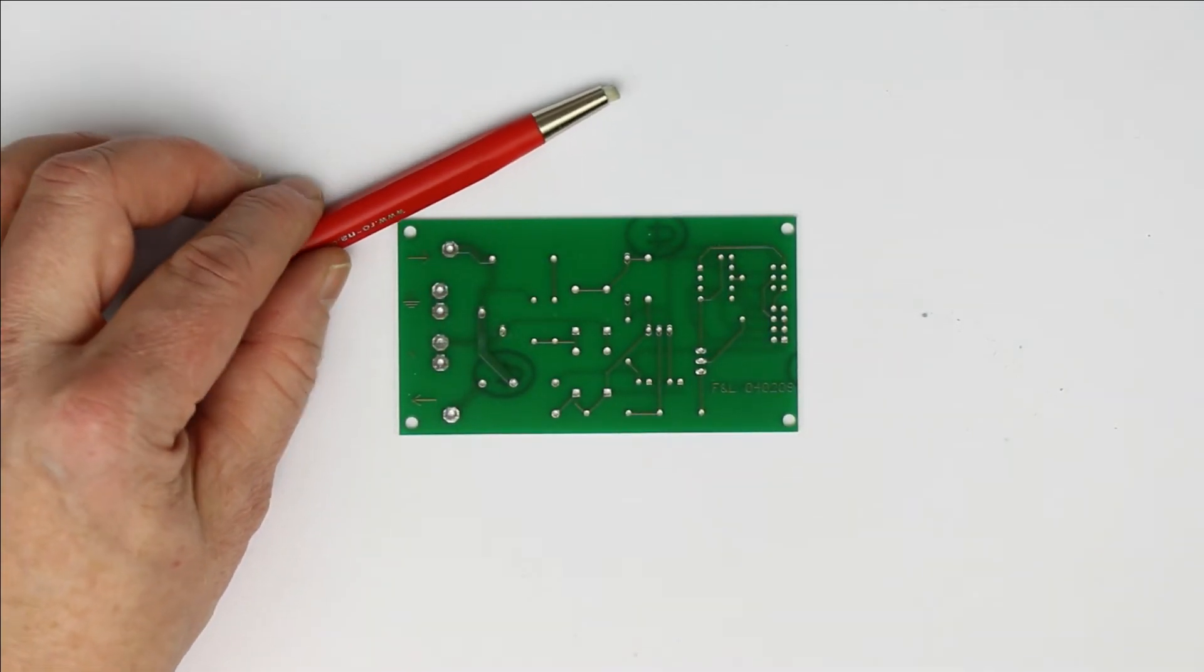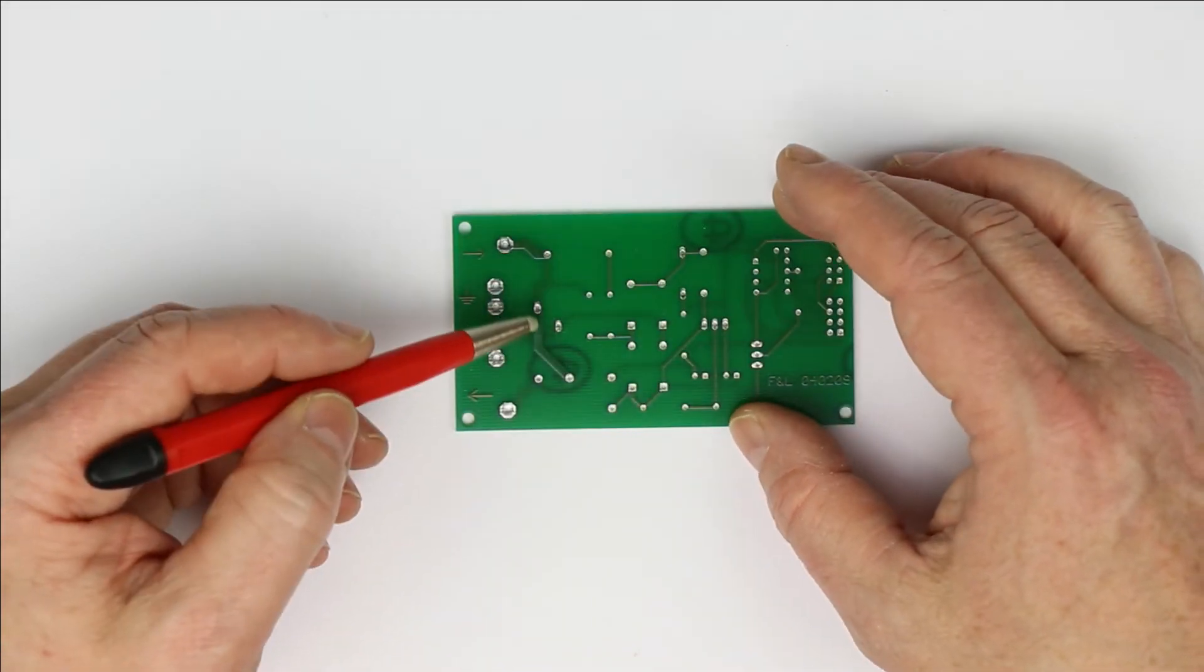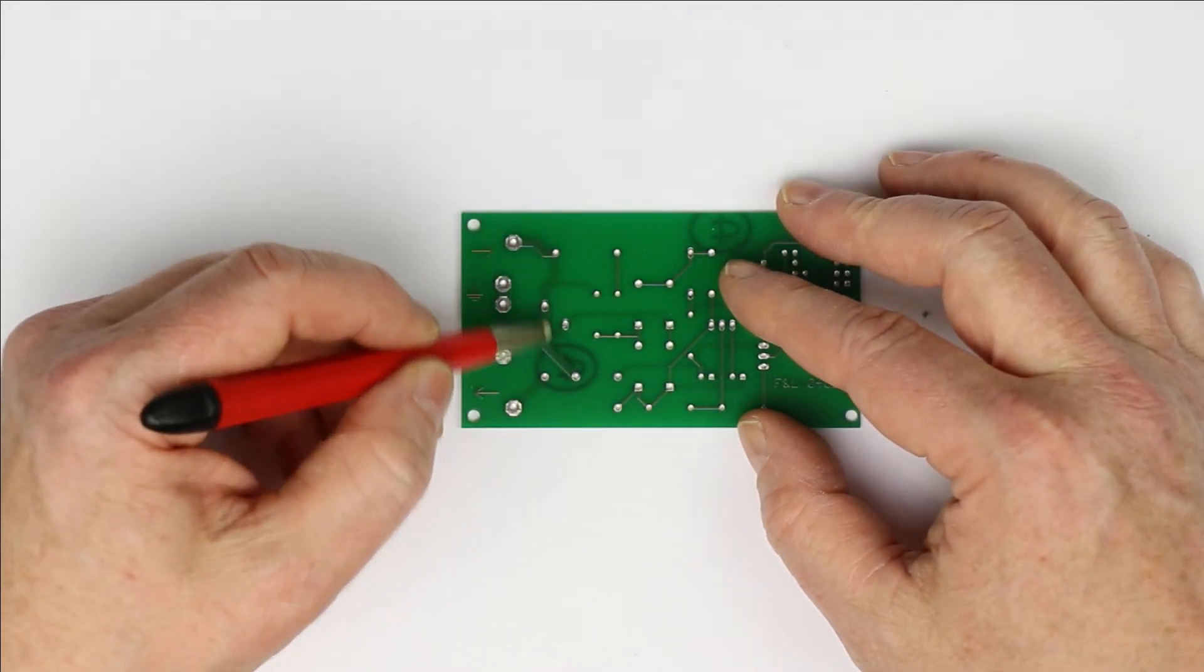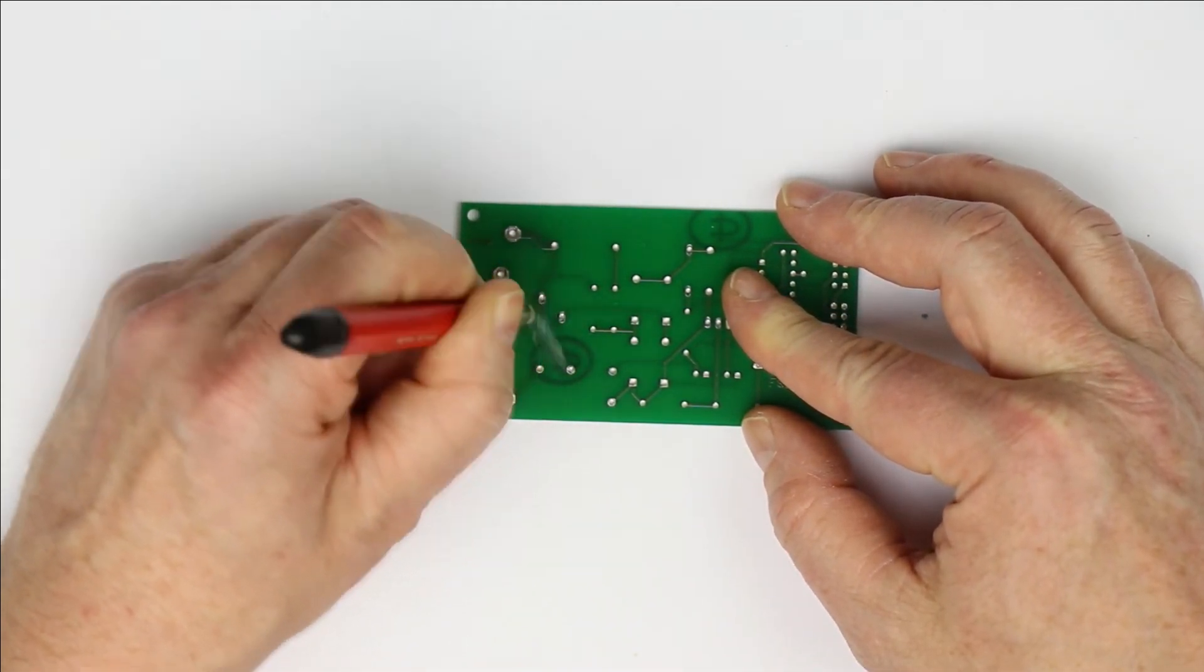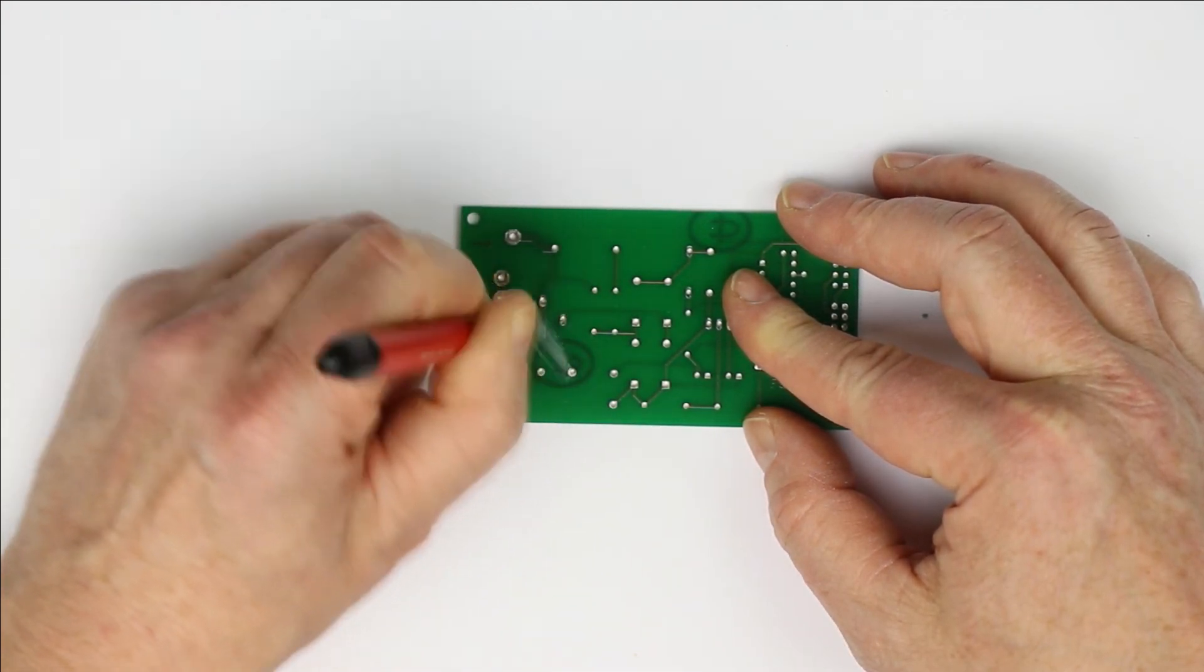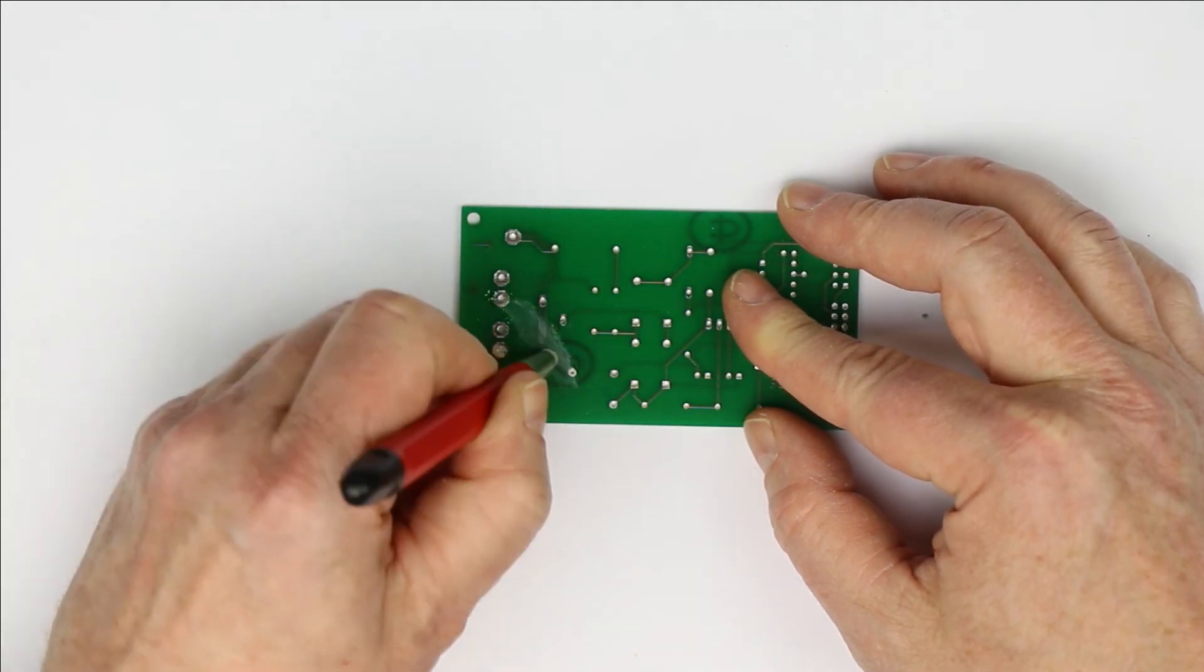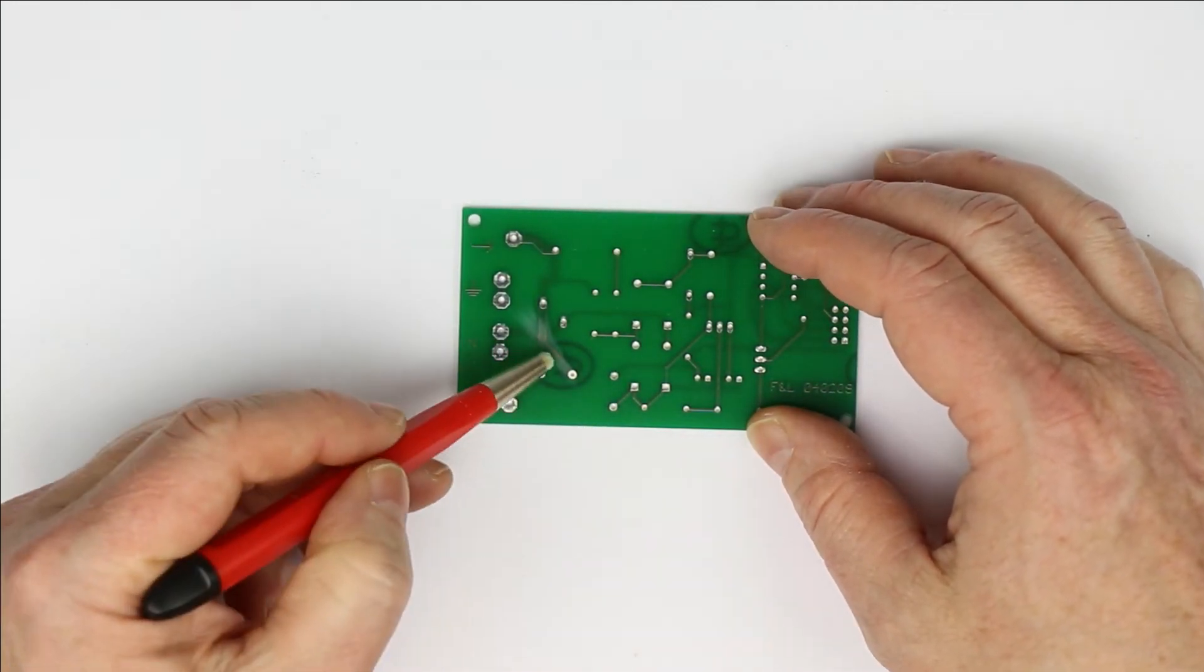For example, if you want to remove the solder mask to get down to the copper layer of a PCB, it takes only a few seconds to rub with the brush. You get the solder mask slowly brushed away and you already can start to see the copper.